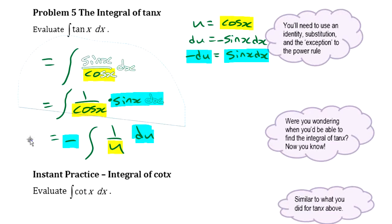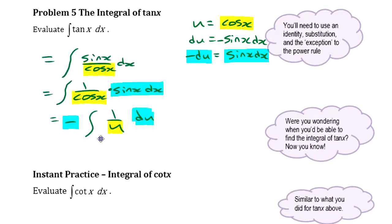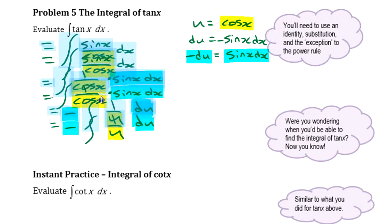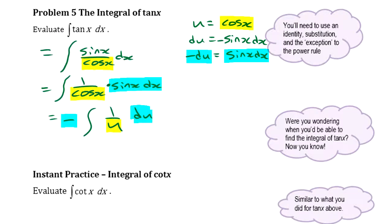Let's make some space here. That's the beauty of electronic paper. Minus integral of 1 over u - that's the exception to the power rule because it's the derivative of natural logarithm.